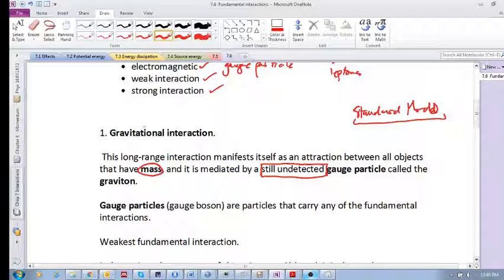The gravitational interaction, believe it or not, is the weakest fundamental interaction. For example, you're sitting next to your calculator or your cell phone. You don't feel the interaction between you and your cell phone. Although there is one, it is the weakest of all the interactions.